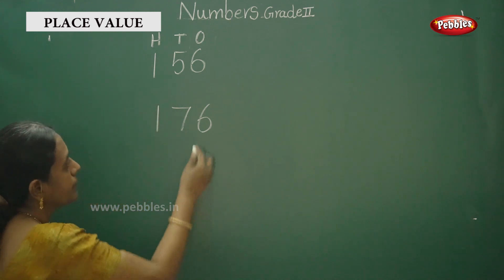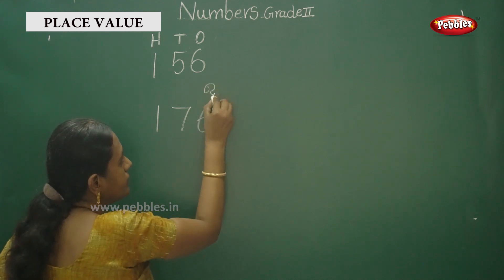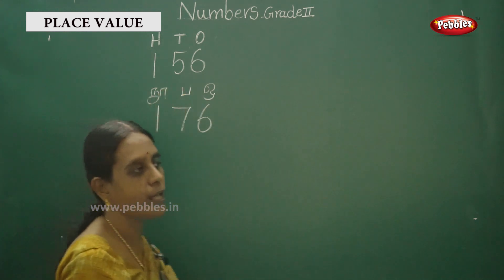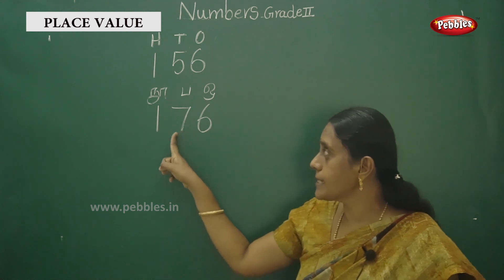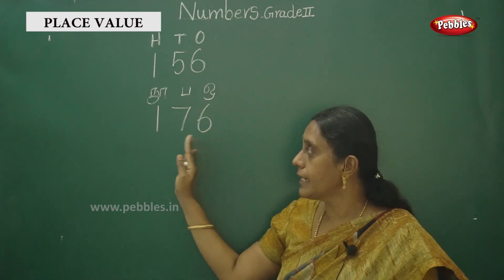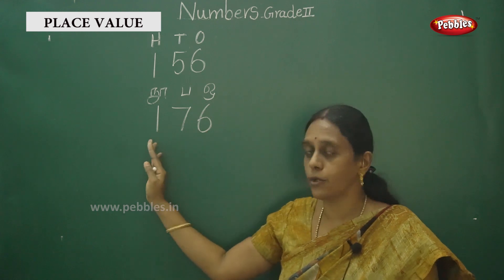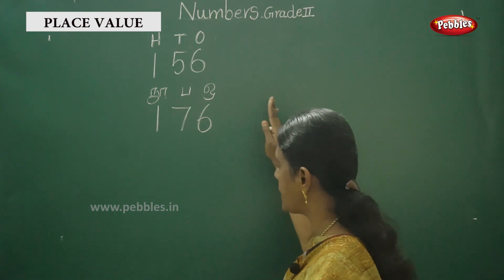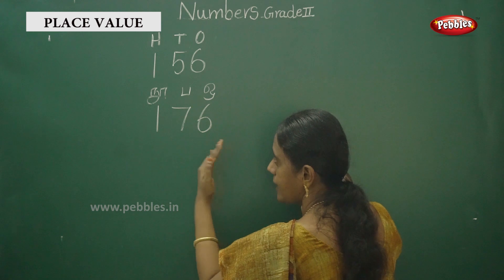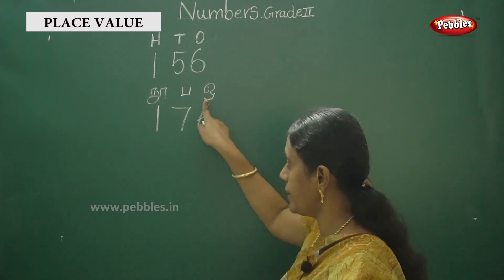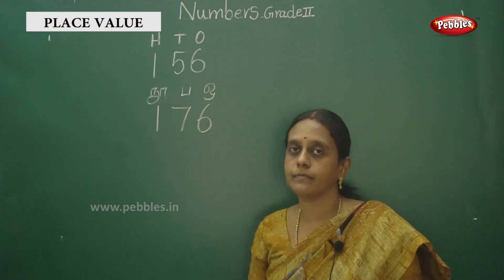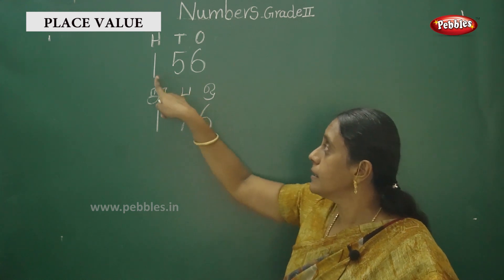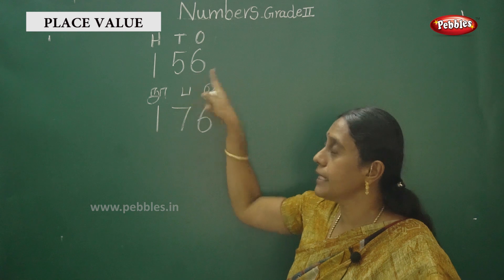So 176 — okay, now ones, tens, hundreds place. One, ten, hundred place. Ones, tens, hundreds are the three positions. Placement is on one side — this is on the right side, then tens is on the right side, and 1 is on the left-hand side. So it is 176, and this is 156.